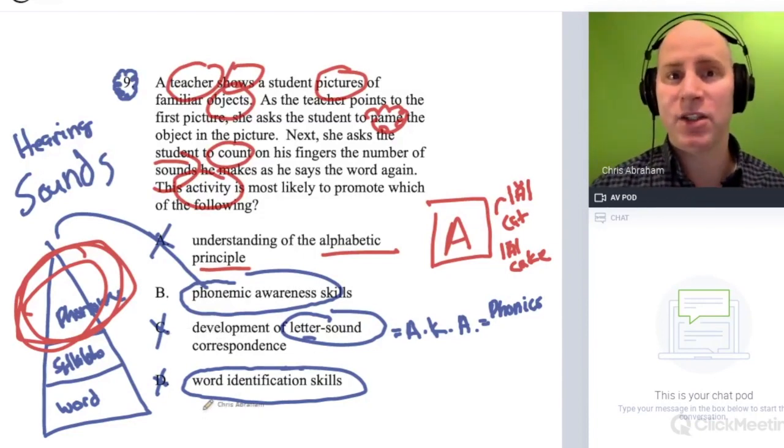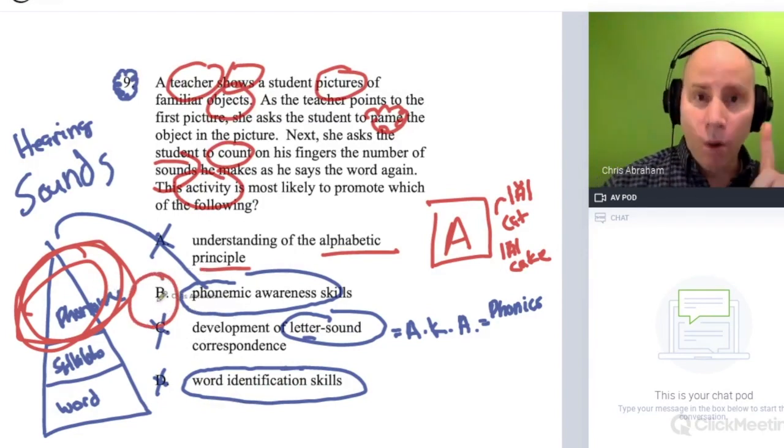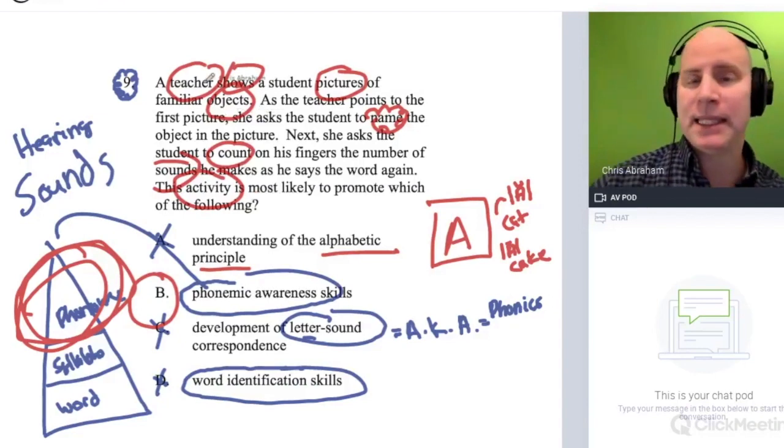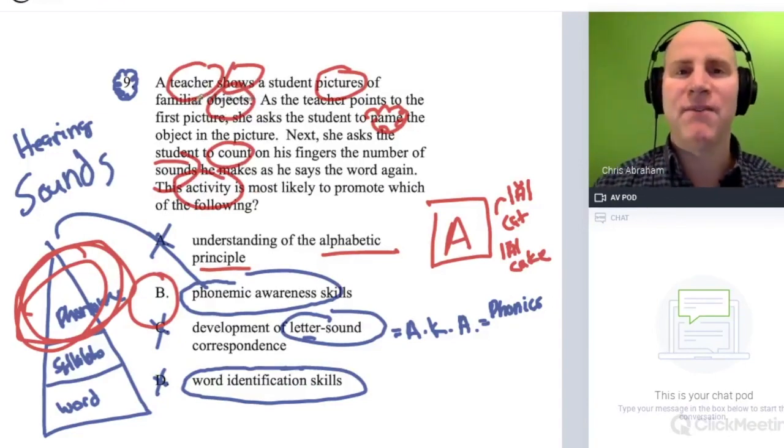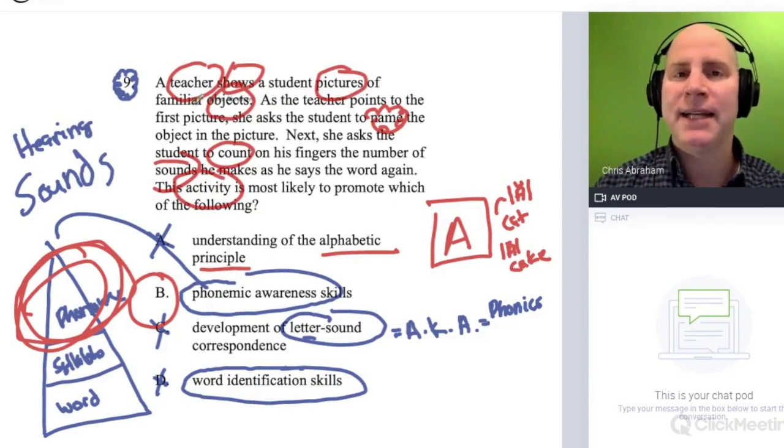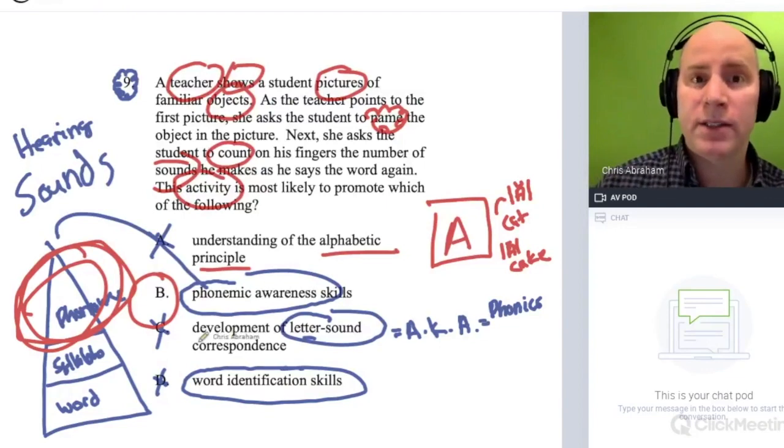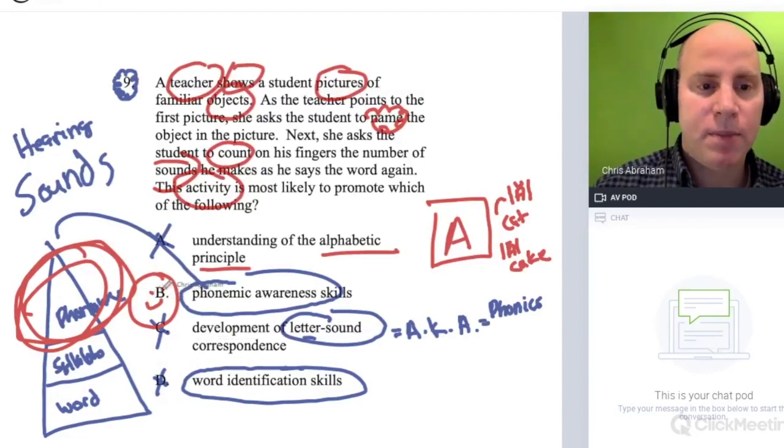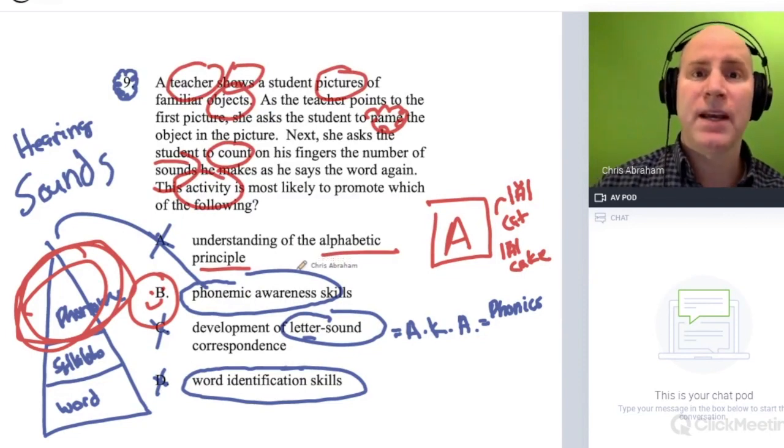If we know it has nothing to do with print, we could cross these out and we'd get to B. Or we could recognize that this activity is a lot like Elkonin boxes or a lot like some phonemic awareness activity that has the student isolate the individual phonemes in a word. This is a phonemic awareness skill. So maybe you get to it that way.